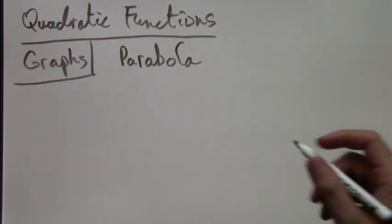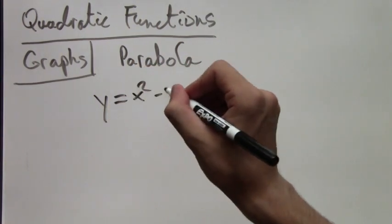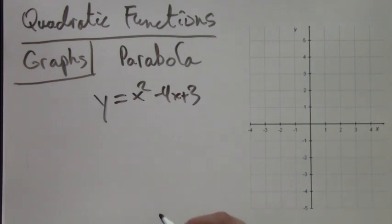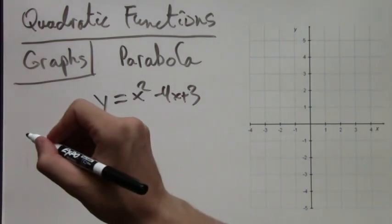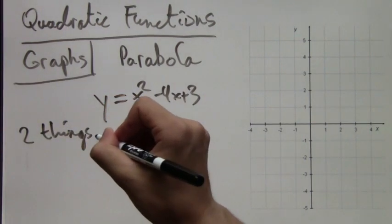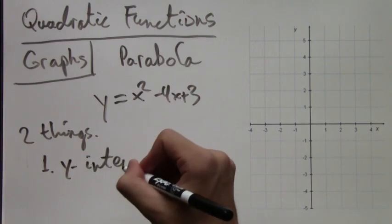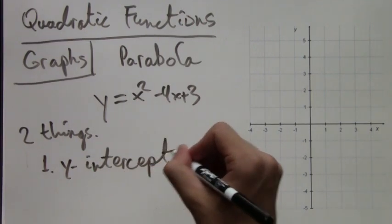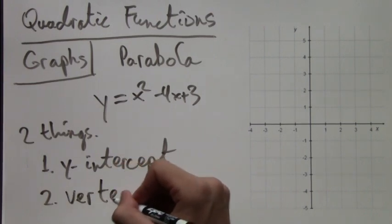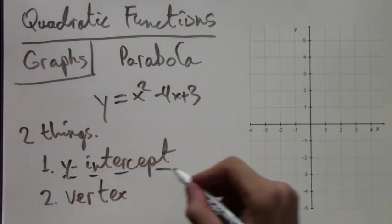Now parabolas have one main problem: when you graph them, you can't have a perfect graph. When you have a line, you can just use a ruler, but parabolas are curves. For this reason, we're only going to need two points through which we're going to draw the parabola, and it's going to be more or less approximate, but good enough. These two points are the y-intercept and the vertex.